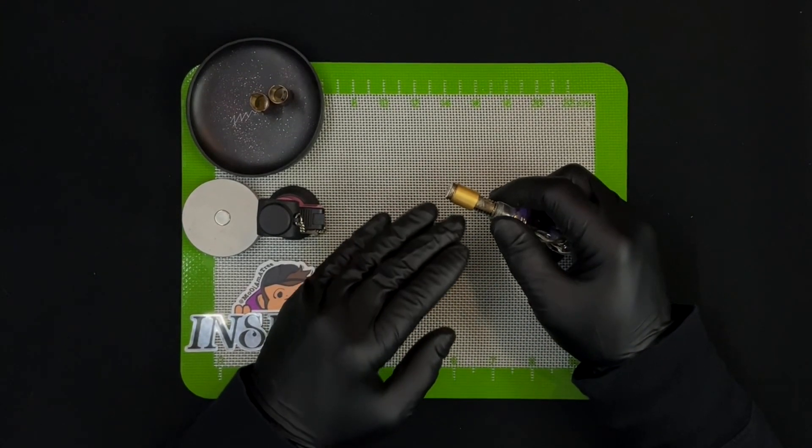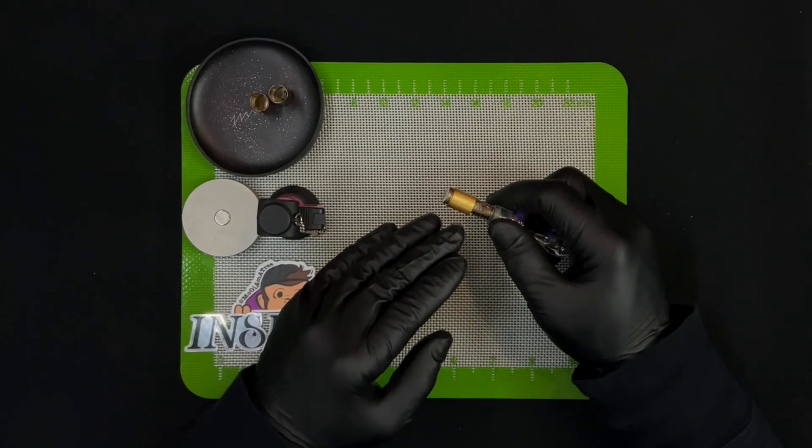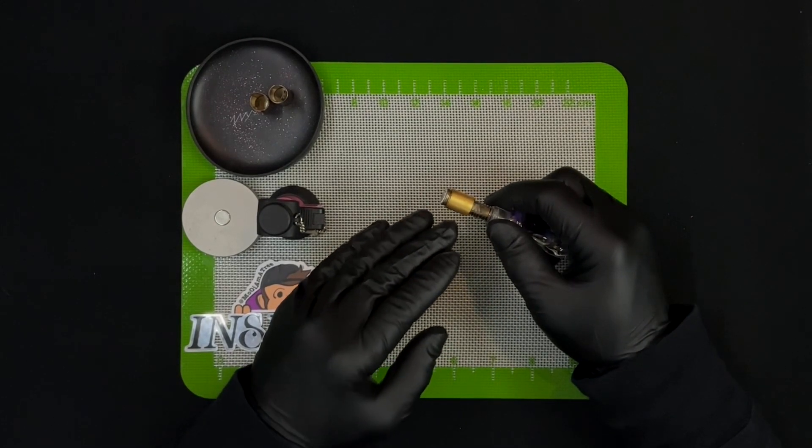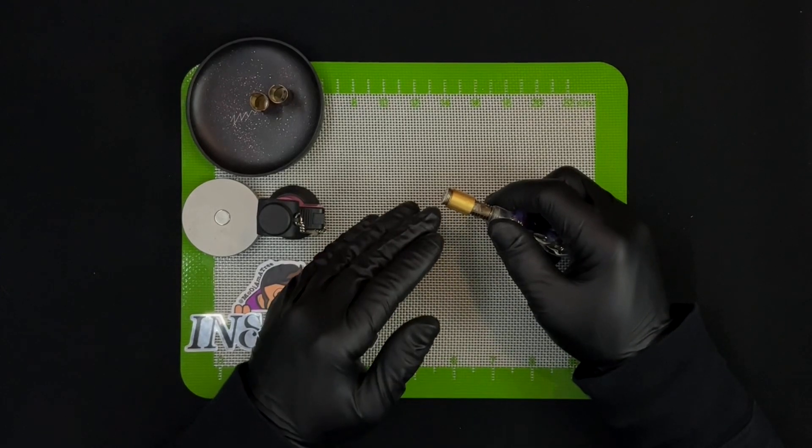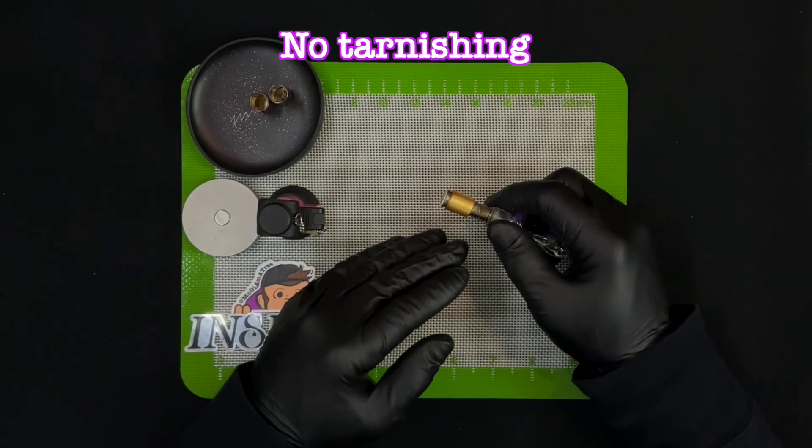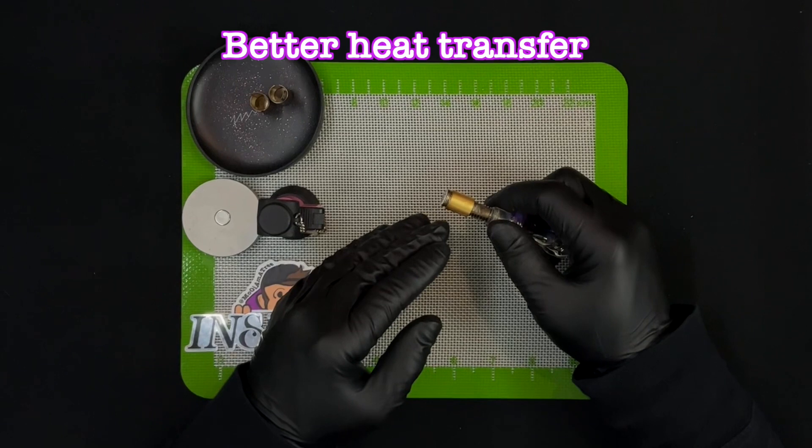Gold has amazing heat transfer properties and with a copper core on the inside and gold plating on the outside you get all of the benefits from the copper FMJ with no tarnishing, better heat transfer, and boy does it look good.